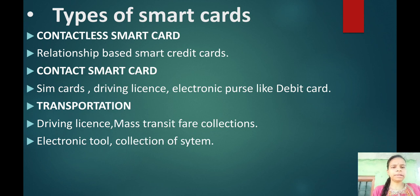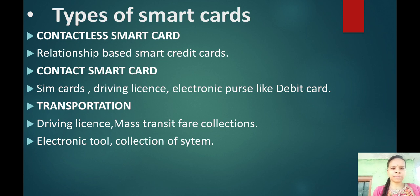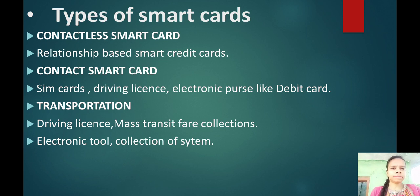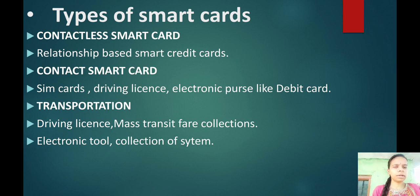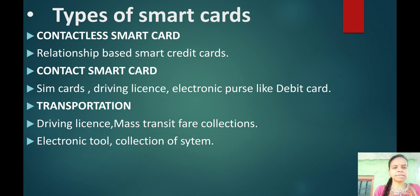Types of smart cards: There are three types — contactless smart card, contact smart card, and transportation smart card. Contact smart cards include relation-based smart credit cards, while contactless smart cards include SIM cards and driving licenses. Electronic purse applications use debit cards. In transportation, cards are used for driving licenses, mass transit fare collection, and electronic toll collection systems.